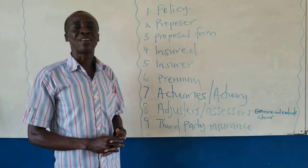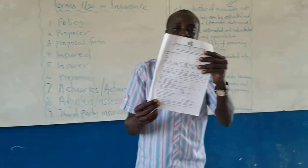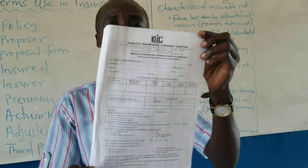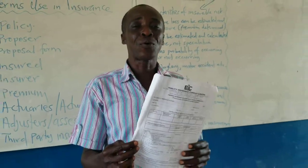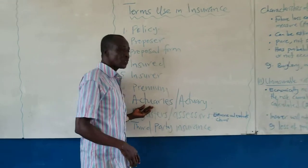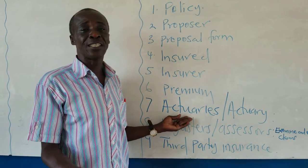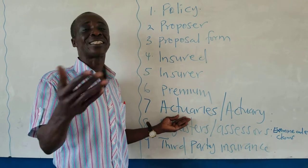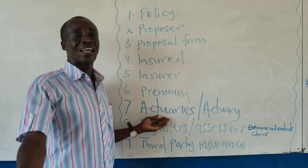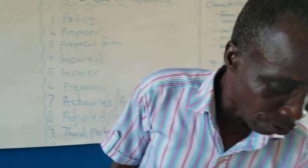Who calculates the premium? The information on your proposal form gives the insurance company a clue as to how much you should pay. There are people who have studied this — we call them actuaries. The actuaries assess and estimate; they evaluate the property or assets and determine how much premium you are supposed to pay. That is why you need to tell them the truth.